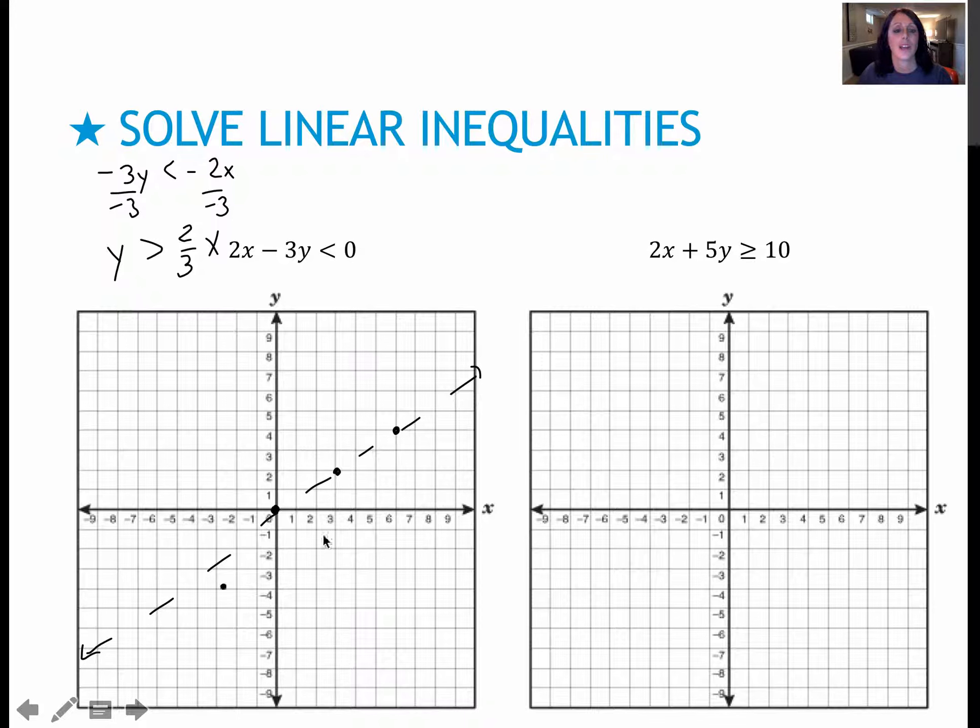And then use any other point besides 0, 0. Anything that's not on the line, so say 0, 7 again would be perfect. If I plug in 0 for x, let's go ahead and plot that point, 0, 7. If I plug in 0 for x, I get the 7 for y, and the 0 for x, I get 7 is greater than 0, which is true, my friends.